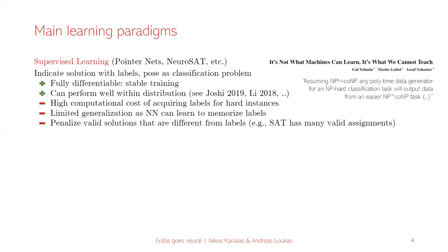If you look at this literature from a machine learning perspective, you will see three types of paradigms: supervised learning, reinforcement learning, and unsupervised learning. Supervised learning is the most popular. The idea is you get a graph and treat it as a node or edge classification problem — you have already solved the problem in a training set, you have many examples of solved instances, and then you train the neural network to produce the output. The great thing is that we know very well how to train this; it's fully differentiable, so optimization of the neural network is effectively easy, and generally stable to train. People have shown this can perform well within the same distribution.